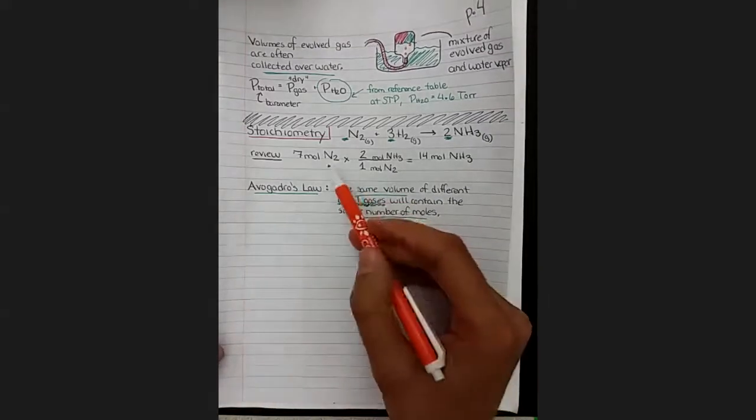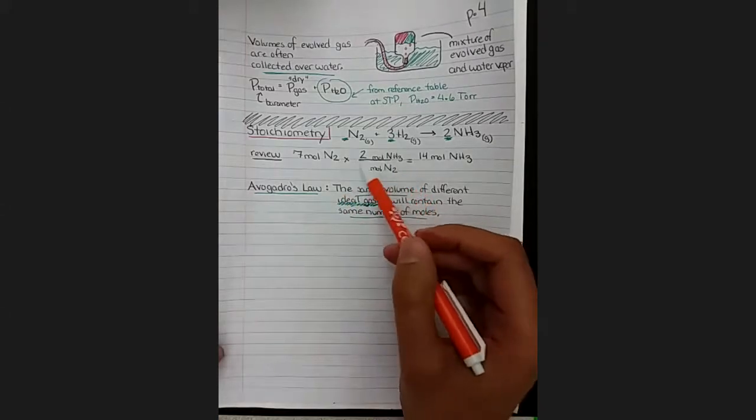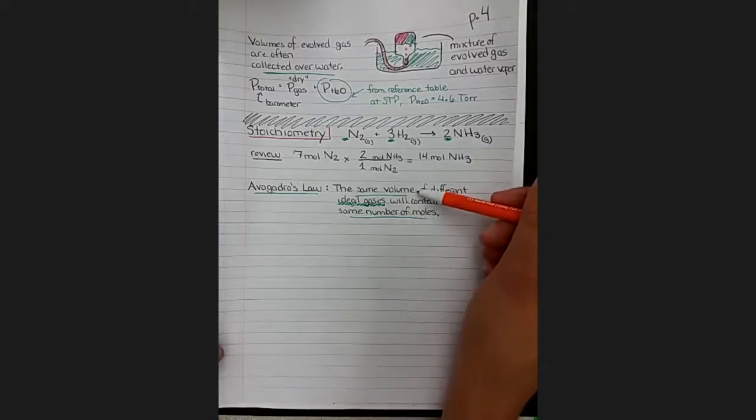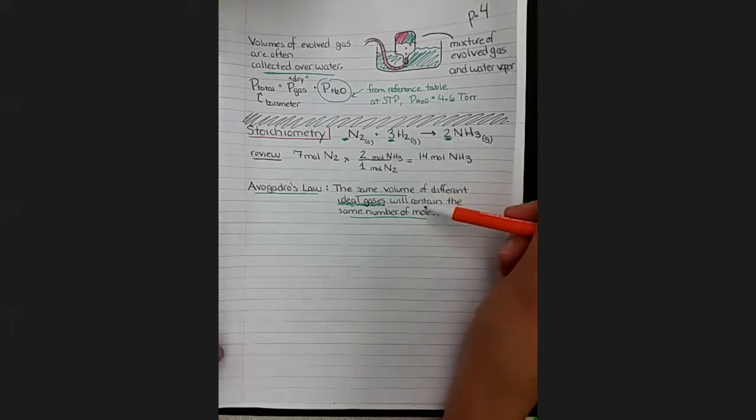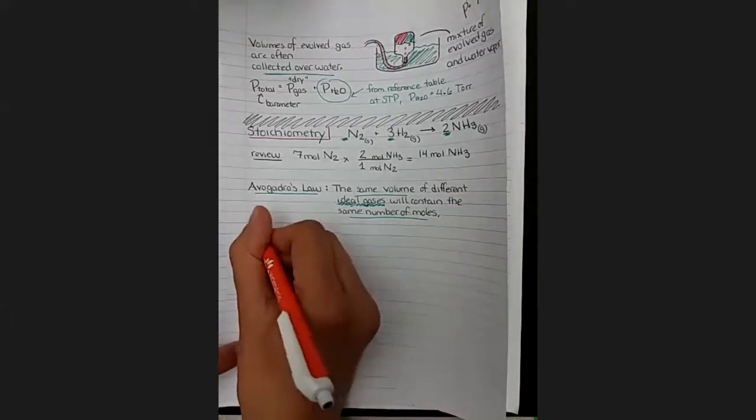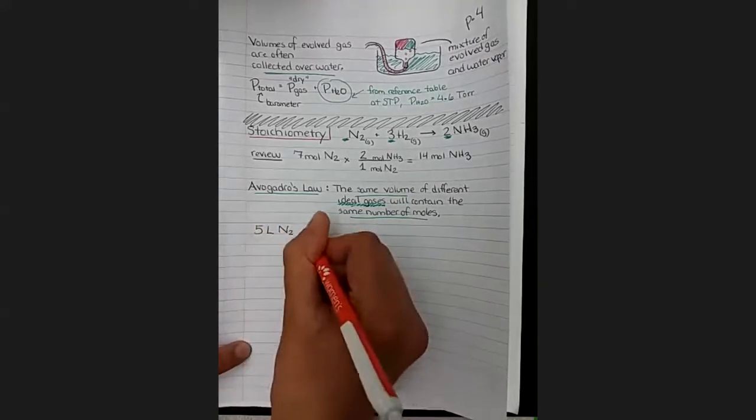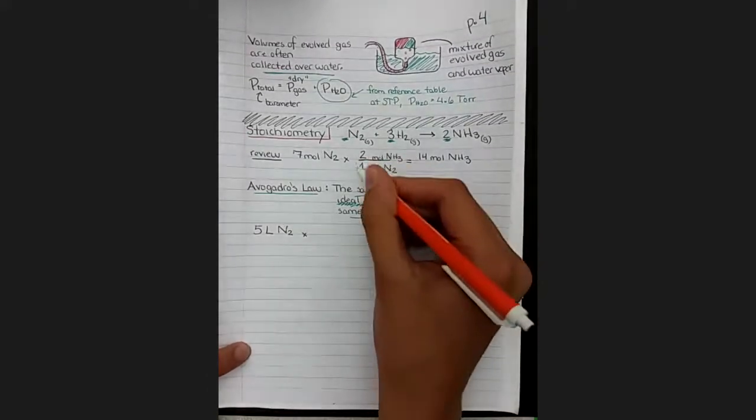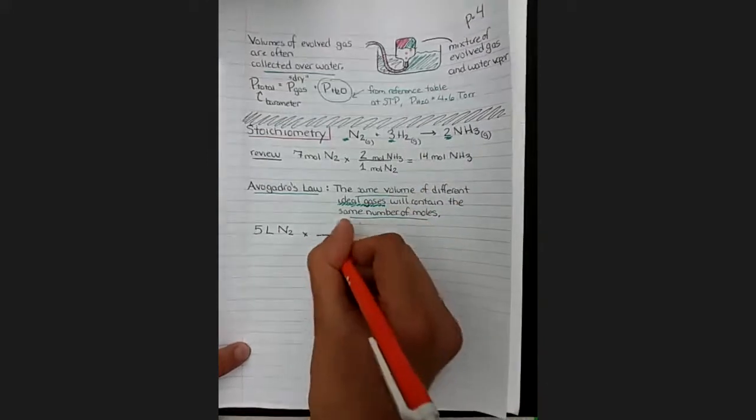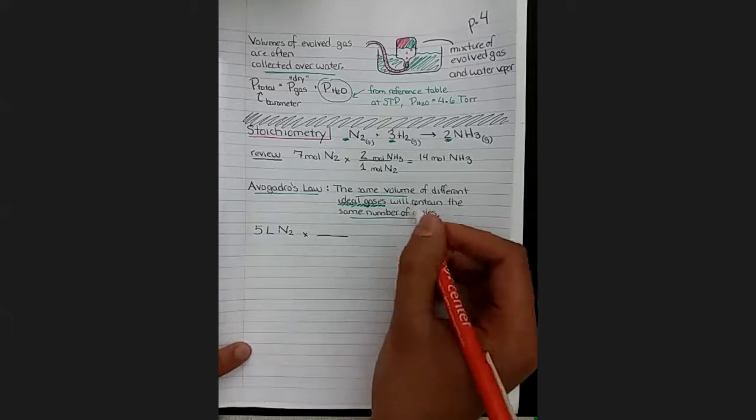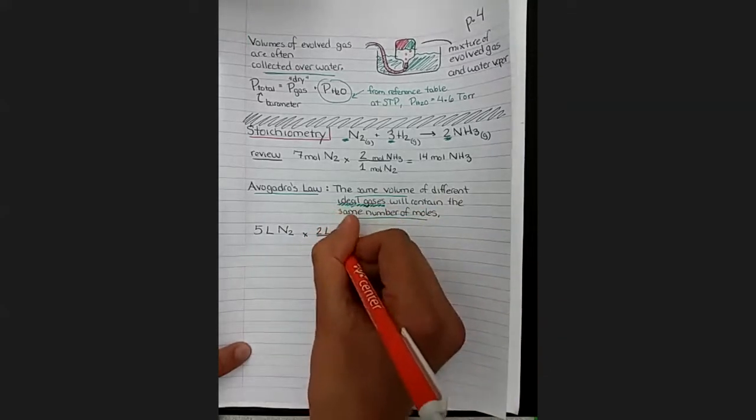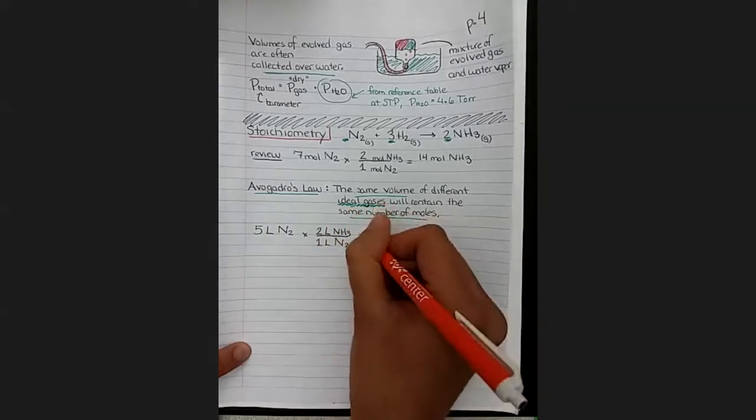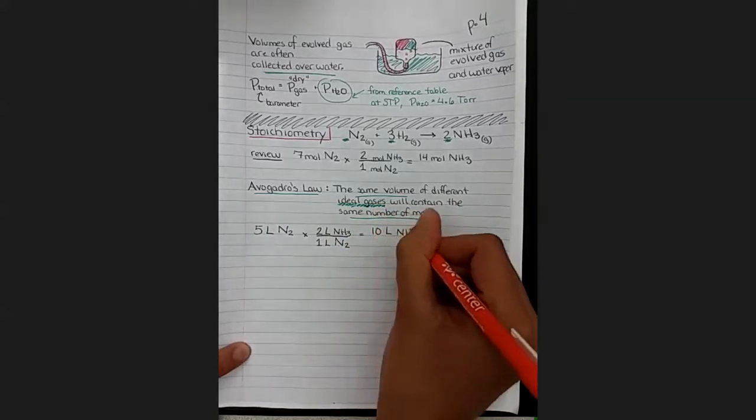What this means is the sort of conversion that we would have used to figure out how many moles of one thing would produce how many moles of another thing, we can do the same sort of calculation using volumes because we know that the volumes and the moles are proportional. Let's say we're given a particular volume of nitrogen instead and that we want to find the volume of product that was formed. We can use the same trick with the stoichiometric coefficient ratios, but we can use it using the volume as long as we know that these are ideal gases. So we can say two liters of ammonia over one liter of nitrogen. That'll give us 10 liters of ammonia formed.